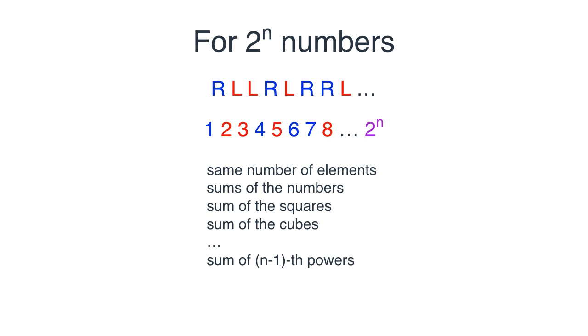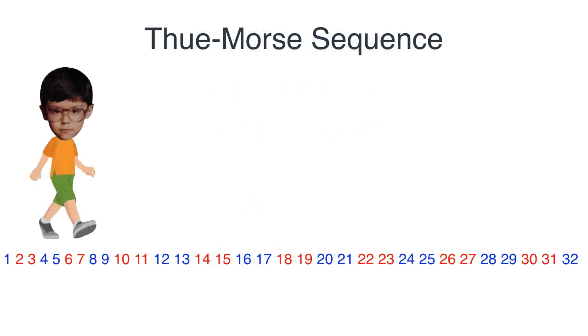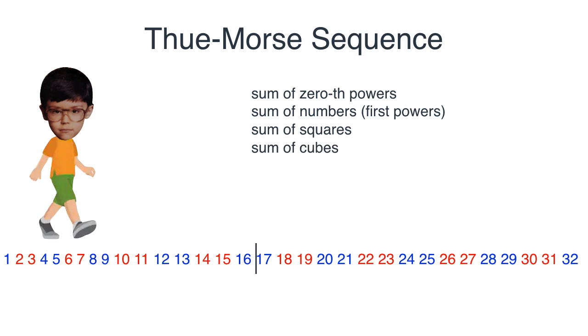Many years later in life, I actually found out that that sequence has a name. It already existed. It's called the Thue-Morse sequence and it has many, many very interesting properties. I encourage you to look it up on Wikipedia and check. It's a really cool sequence. But yeah, in particular, the one we had here is that if I take it all the way to 2, I have the same sum of 0 powers, which is the same number of elements because the 0 power of something is 1. If I go all the way to 4, I have the same sum of numbers. If I go all the way to 8, I have the sum of squares. All the way to 16, I have the same sum of cubes. All the way to 32, I have sum of 4 powers, et cetera, et cetera.